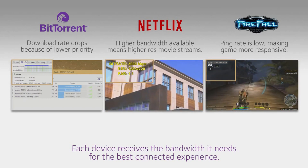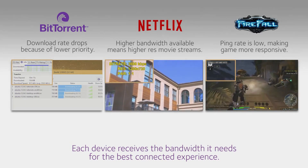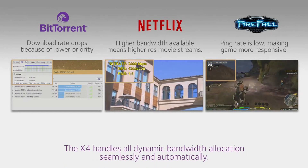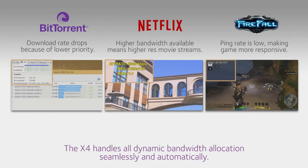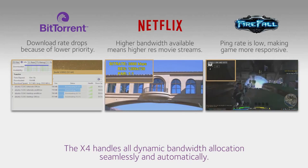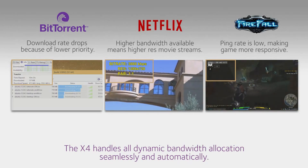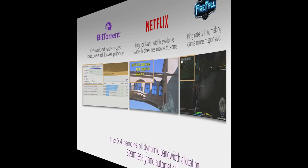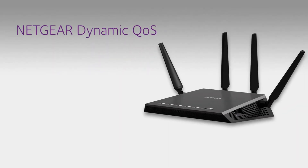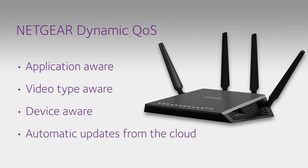The X4's Dynamic QoS prioritizes the connected devices, making sure each gets the bandwidth it needs for the best connected experience. The X4 handles all this dynamic bandwidth allocation seamlessly and automatically. There's no setup or user configuration required. Only Netgear Dynamic QoS is application-aware, video-type-aware, device-aware, and updatable from the cloud.